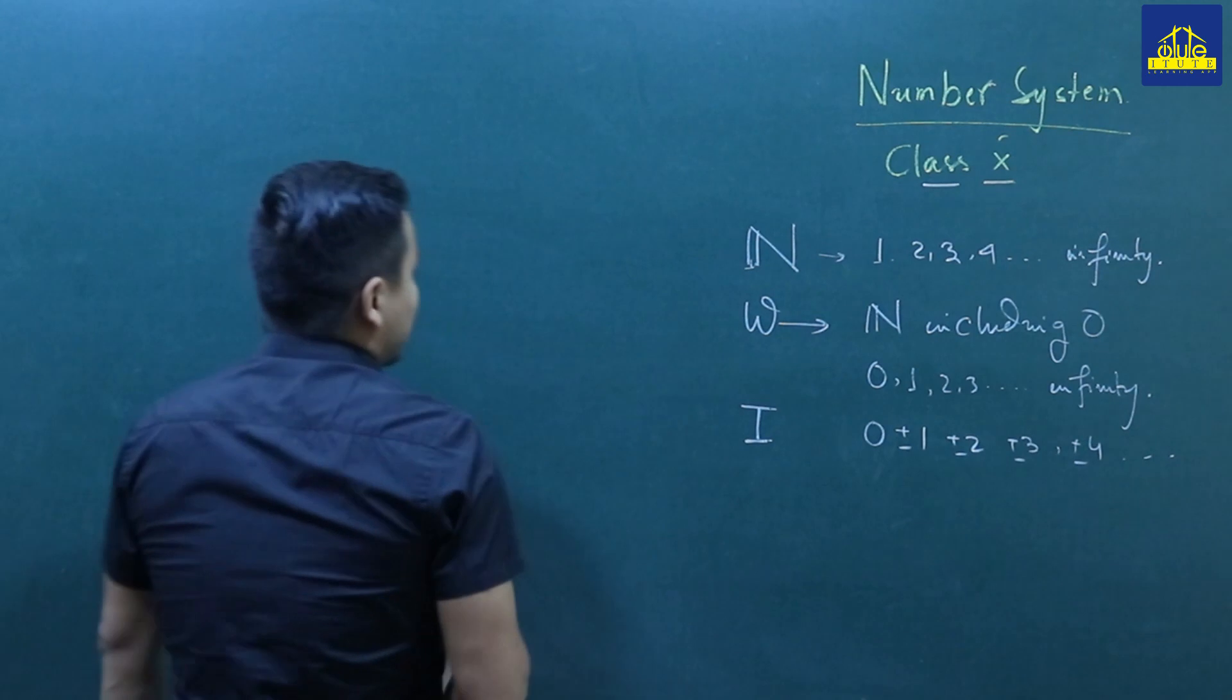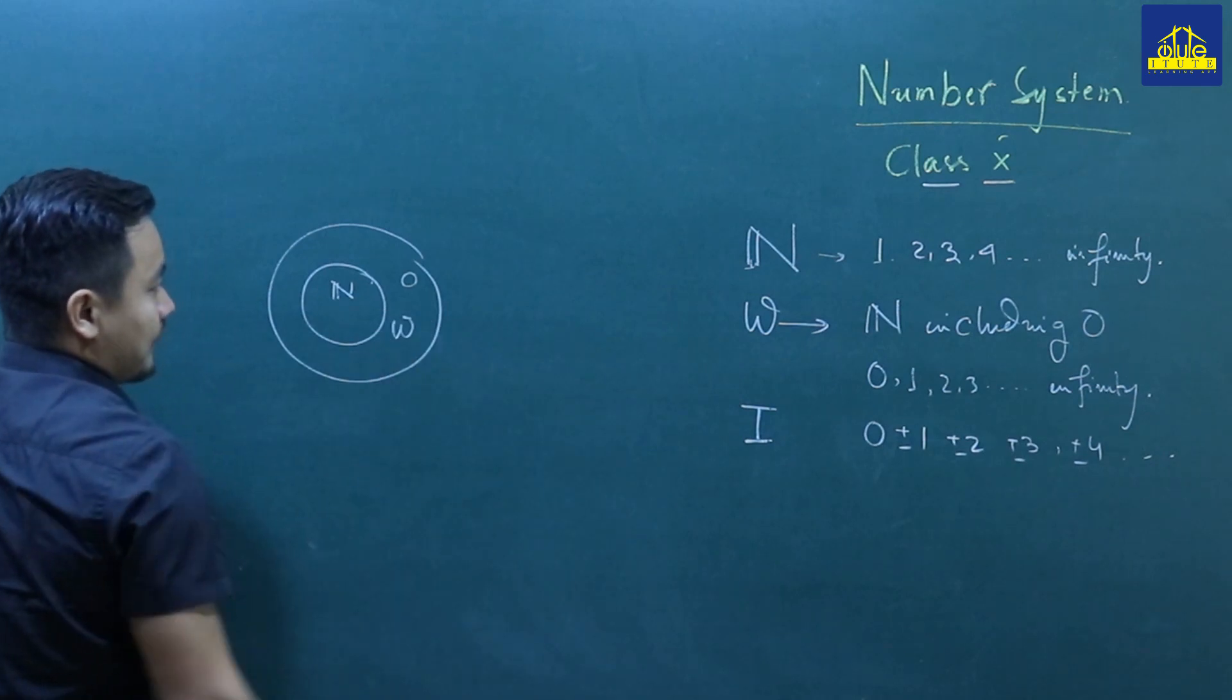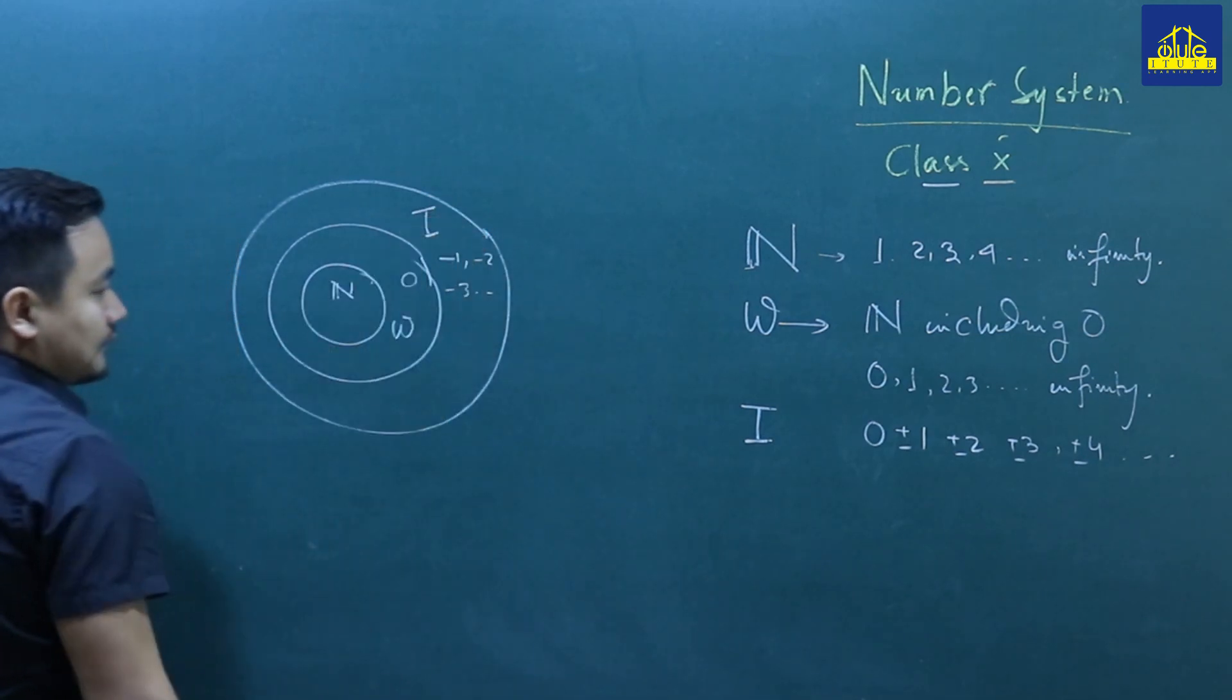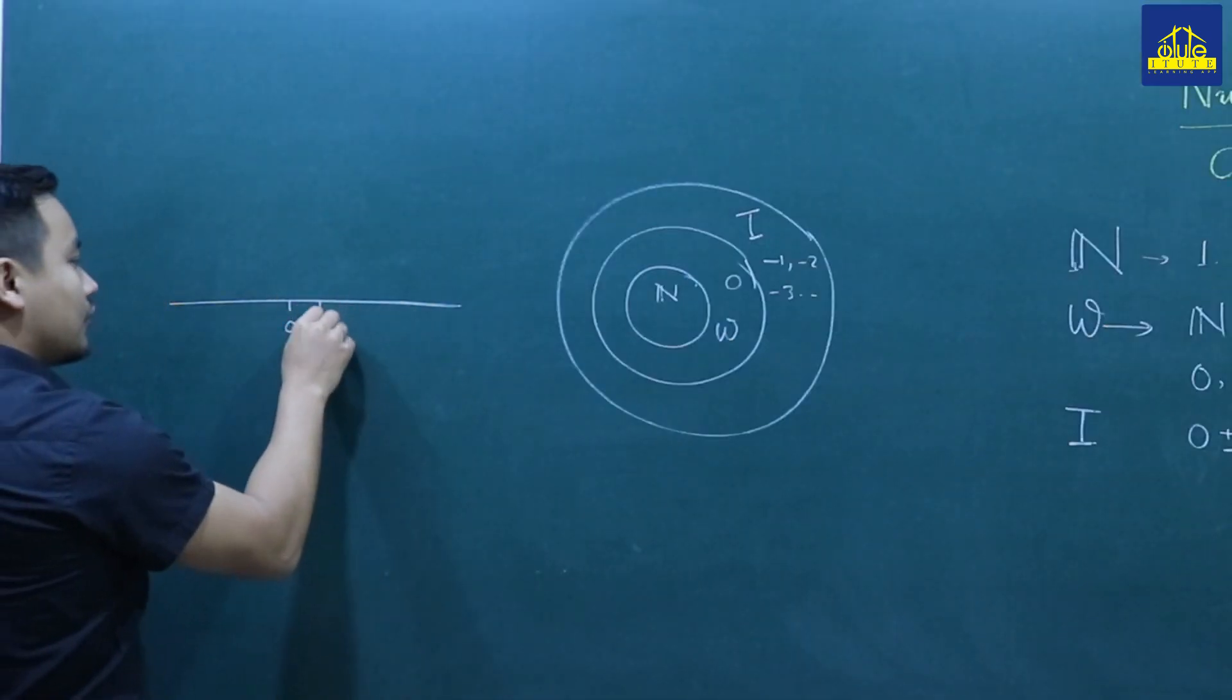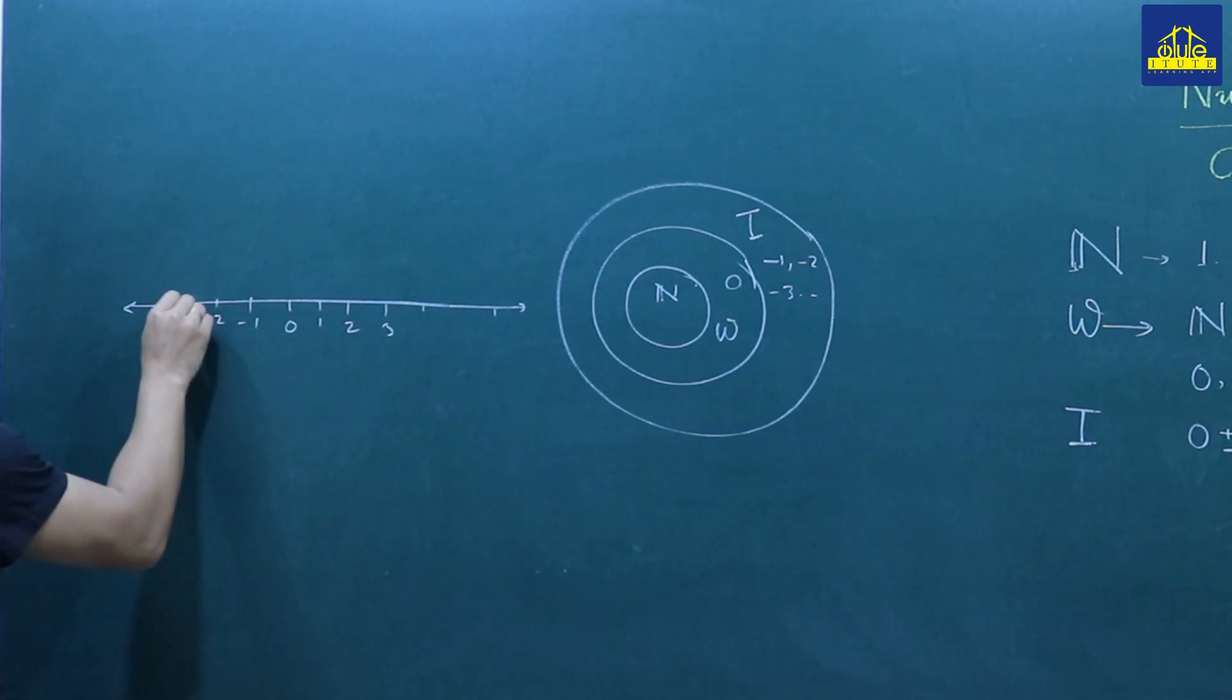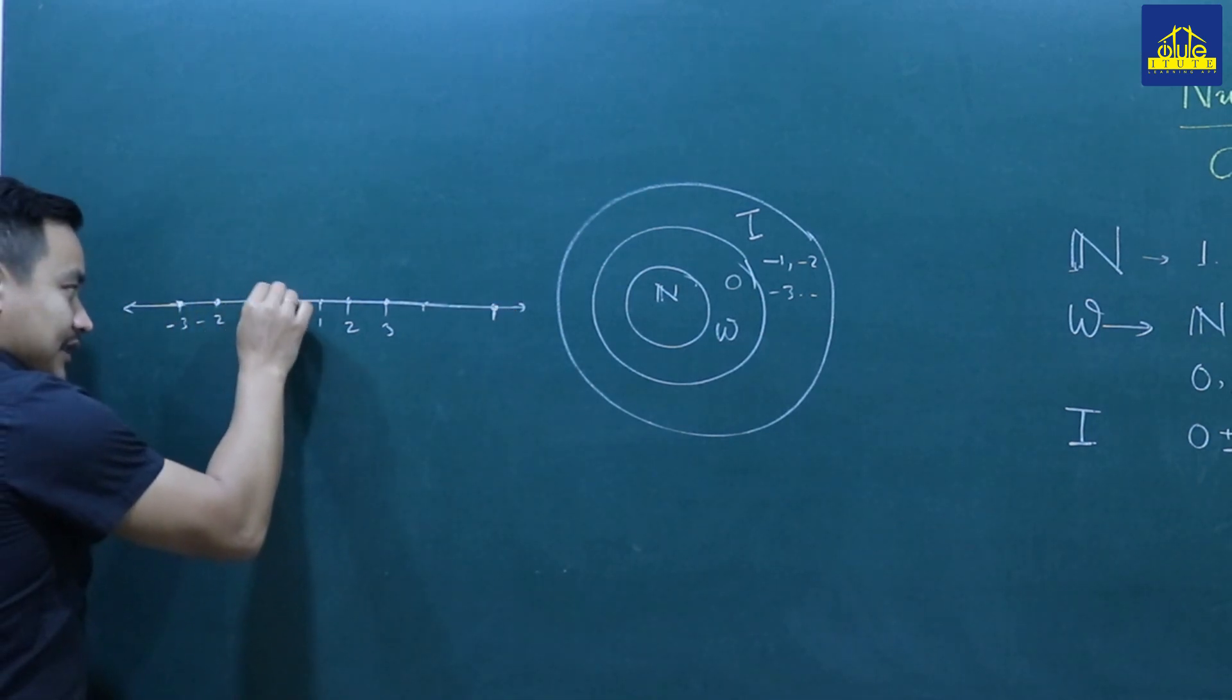We can see that natural numbers are contained in the whole number system, and whole numbers are contained in the integer system. On the number line we represent this: here is zero, then 1, 2, 3 in the positive direction, and minus 1, minus 2, minus 3 in the negative direction.